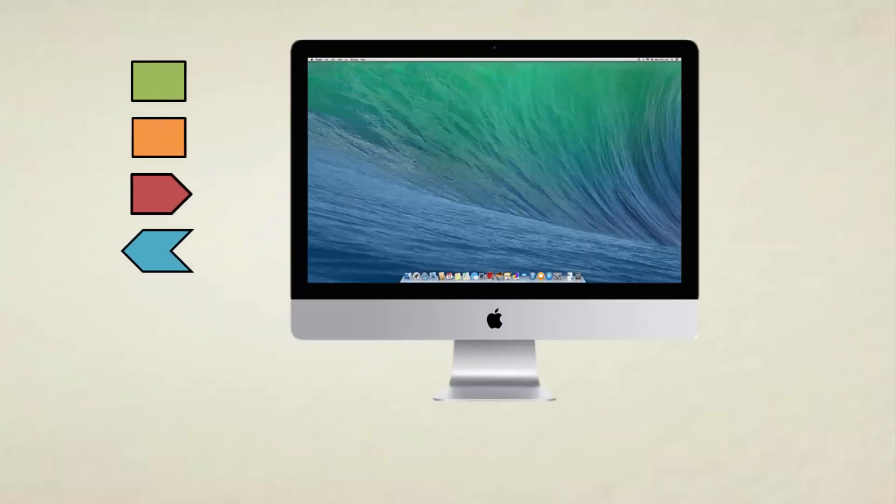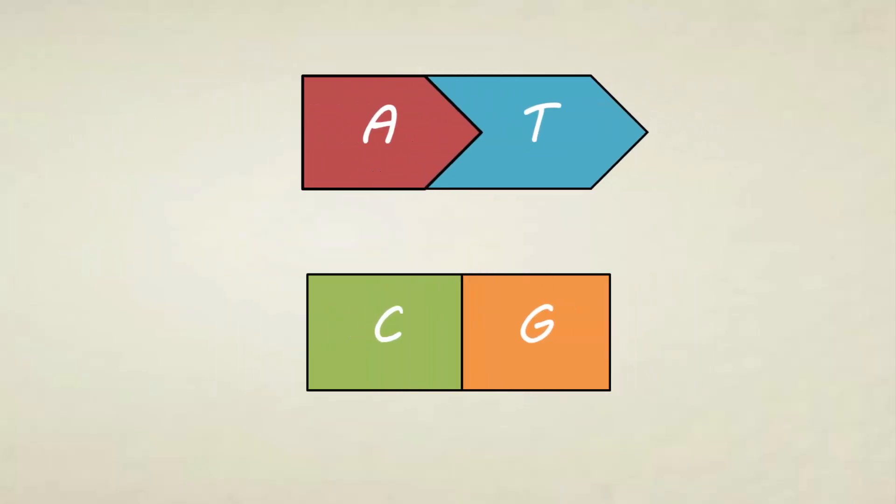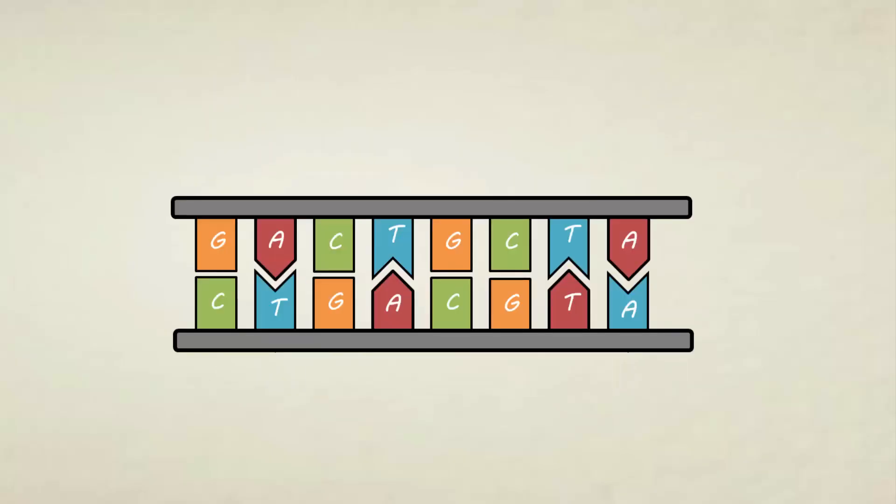DNA stores information by using the four chemical bases. The bases pair up with each other: adenine with thymine and cytosine with guanine. We indicate the direction of DNA by looking at both ends of the strand. There are 5' end and 3' end.